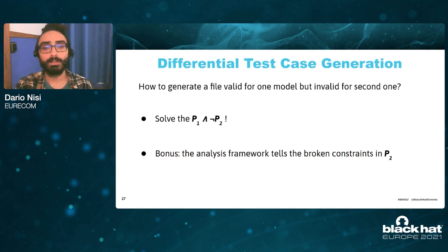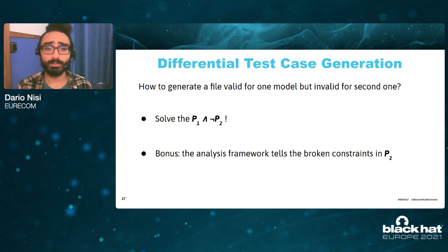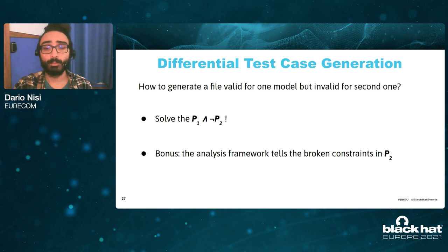How can we use these SMT problems for creating differential test cases? Suppose we have two models for which we want to create differential test cases. We take the first one, translate it into its formula, then do the same for the second model. We take the two formulas and apply a logic operation: we take the first and do a logic AND with the negated version of the second formula. This gives us an SMT problem whose solutions are files that respect all the terminal constraints of the first problem but break at least one of the constraints of the second problem. Our analysis framework is also able to automatically tell us which are the broken constraints in the second model.